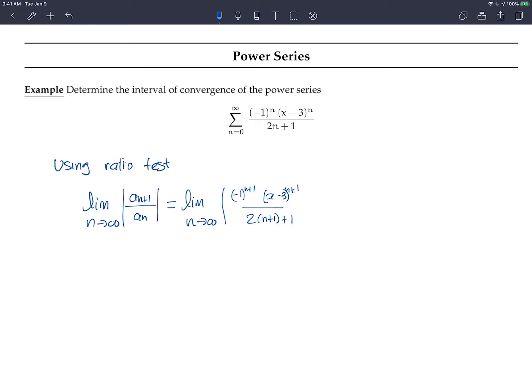And now, instead of dividing by the a_n term, I want to multiply it by the reciprocal. So the 2n plus 1 goes on the top, and x minus 3 to the power of n goes on the bottom. I forgot the negative 1 to the power of n, but these are going to disappear, right?